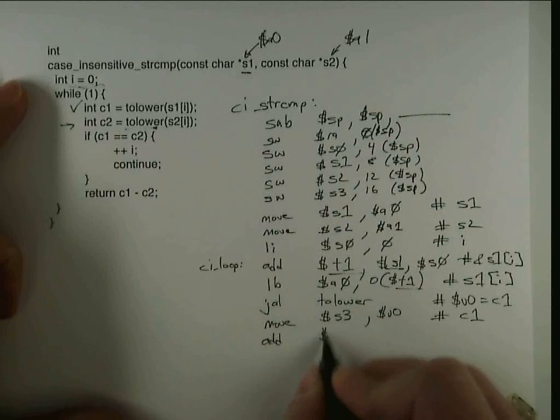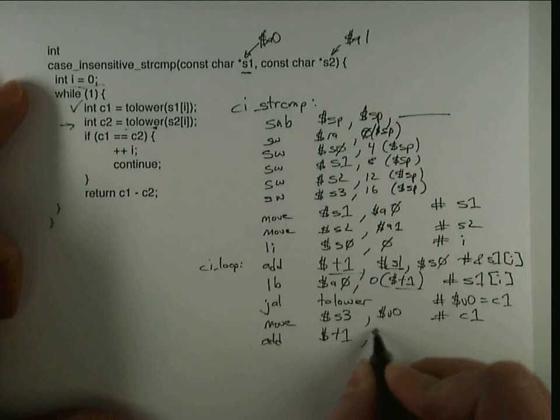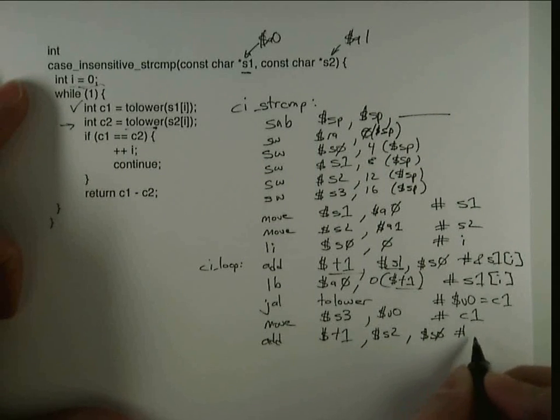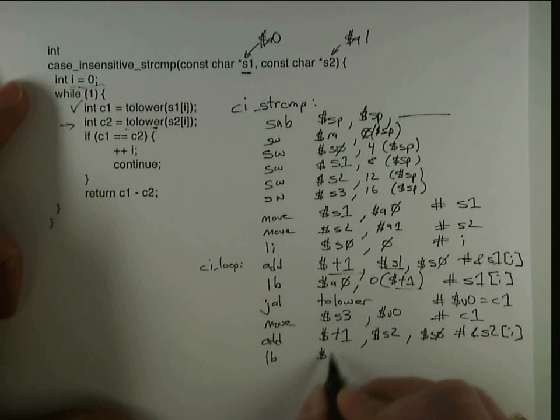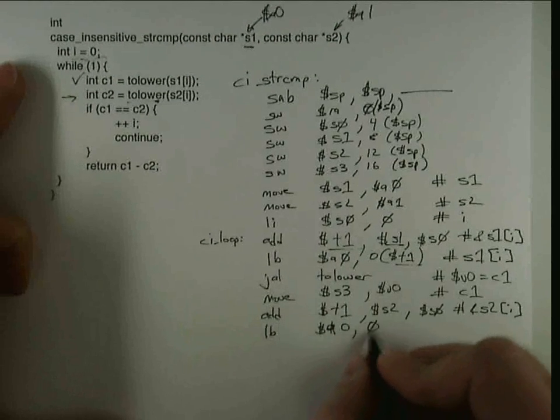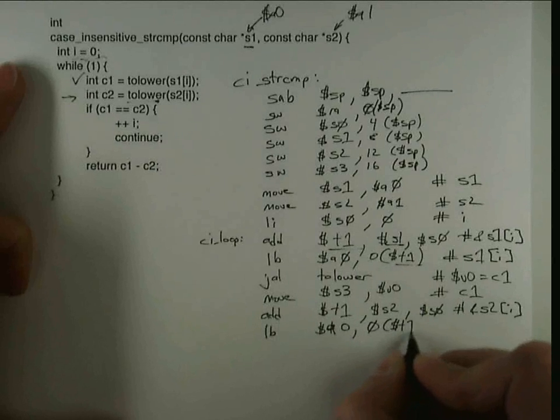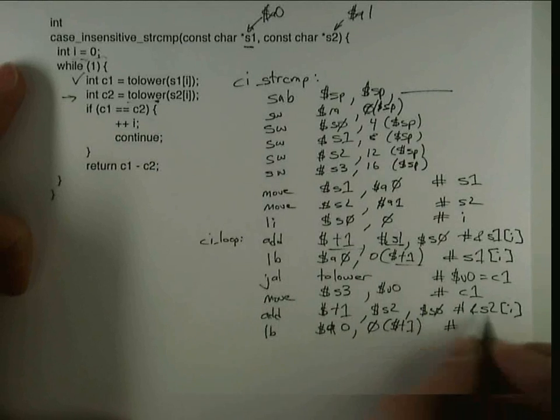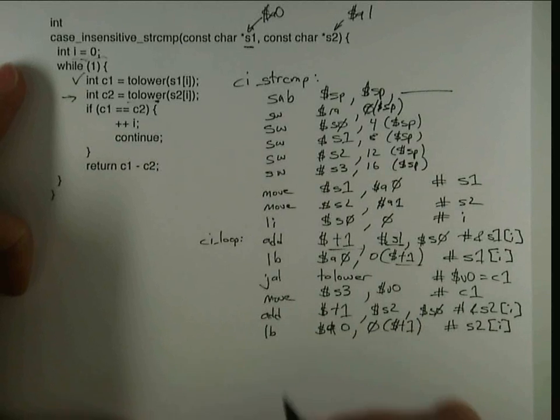So I'm going to add into t1, s2, s0, and that gives me the address of s2i. And then a load byte, and again into a0, so that I can call this function 0 offset of t1. So that t1 was the address of s2, so doing the load byte actually gets me the value of s2i.